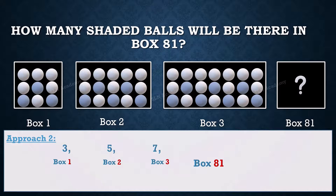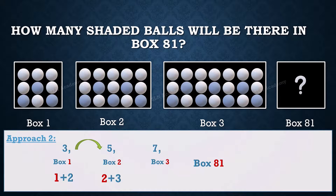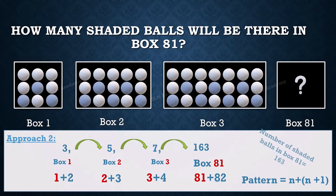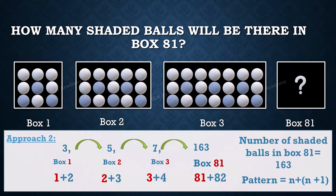Approach 2: In box number 1, there are 3 shaded balls — we can represent it as 1 plus 2. In box number 2, there are 5 shaded balls — represented as 2 plus 3. In box number 3, there are 7 shaded balls — represented as 3 plus 4. So for box number 81, it can be written as 81 plus 82, which is 163. The pattern is n plus (n+1), so the number of shaded balls in box 81 is 163.